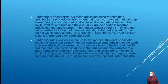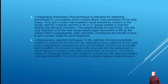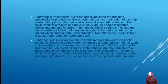Intrapulpal anesthesia: this technique is indicated for obtaining anesthesia for a procedure requiring direct instrumentation of pulp tissue. First, place a cotton ball soaked in a topical anesthetic solution in the cavity. Wait a minute, then a 25, 26, or 27 gauge needle is inserted directly into the pulp chamber and held firmly. Initially, brief discomfort is felt by the patient, which subsequently subsides. Sometimes the needle tip is bent to get a proper angle for good access.